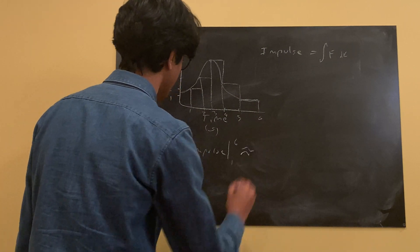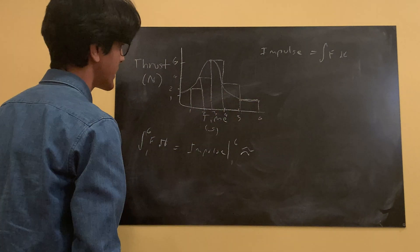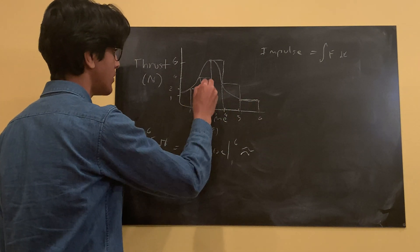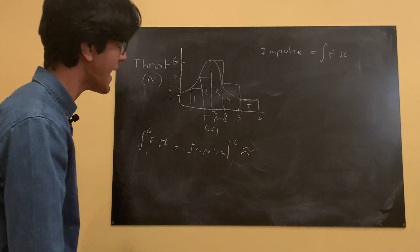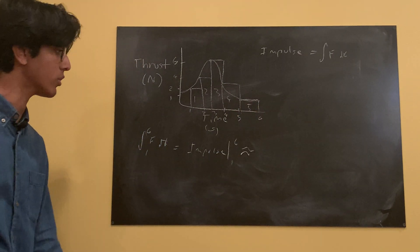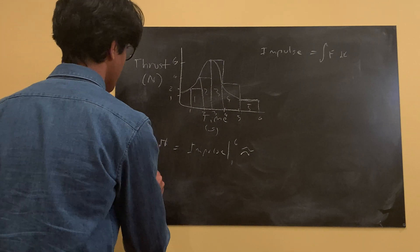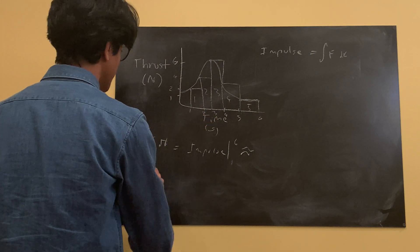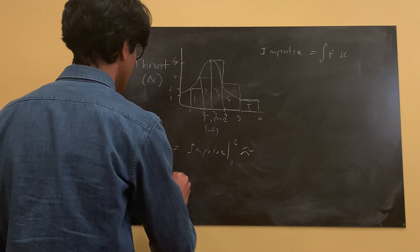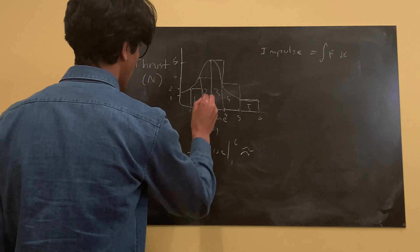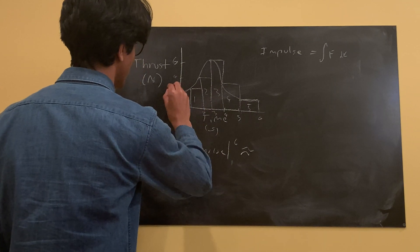And that's approximately going to be equal to the areas of each of these rectangles. So with rectangle one, rectangle two, rectangle three, rectangle four, rectangle five—add all those areas together and we'll get our impulse. So the area of rectangle one is going to be equal to the base, which is one second times the height, which is two newtons. Plus for the second one, each is going to be one second base. And then with the height of four.